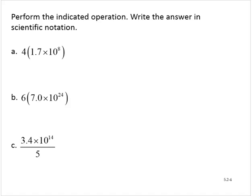Exercise A, we have 4 times 1.7 times 10 to the eighth. Using commutative properties, really associative properties, this is the same as 4 times 1.7 times 10 to the eighth. And I'm going to use the associative property to group together the 4 times the 1.7.